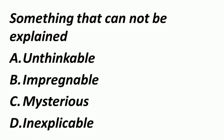Something that cannot be explained — जिसे समझाया ना जा सके. इस चीज को हम कहते हैं Inexplicable. Unthinkable — that cannot be imagined or possible. Impregnable — unable to be broken into, जिसको तोड़ा ना जा सके. Mysterious — difficult to understand, मतलब समझने में मुश्किल.